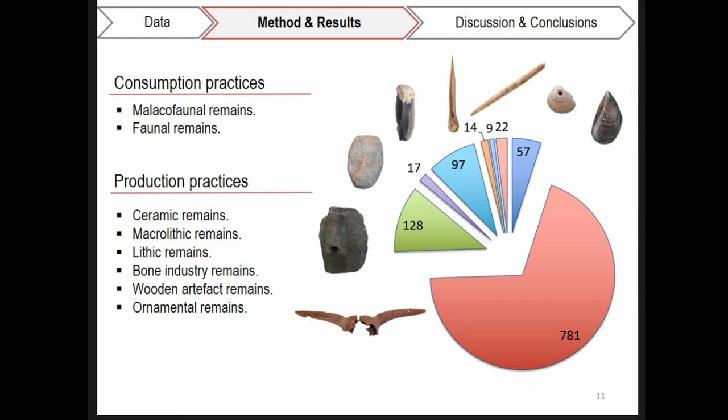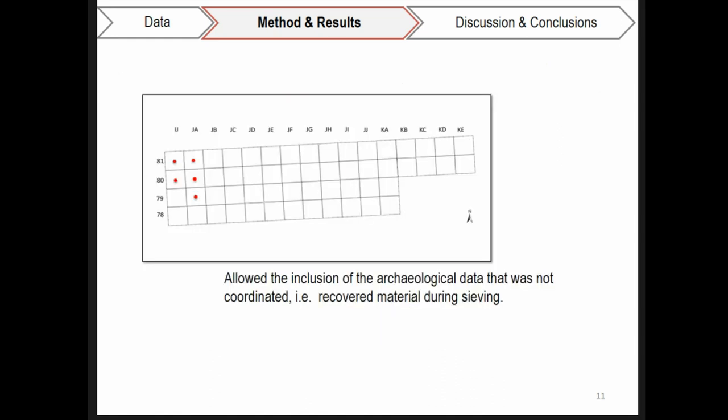Regarding the data used, data was divided according to the nature of the practices in which they were involved. Hence, we differentiated between archaeological remains that were implicated in consumption and production practices. It is important to stress that data used was processed to measure the frequencies for each constituent sampling unit. These sampling units were regular spatial areas of one square meter, and the geographic reference taken for performing the spatial analysis was the center of each sampling unit.